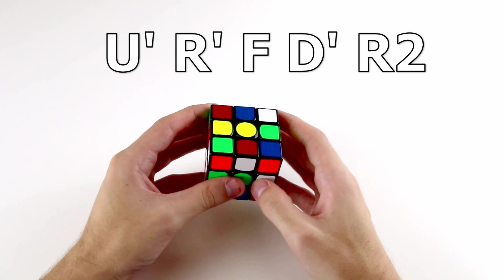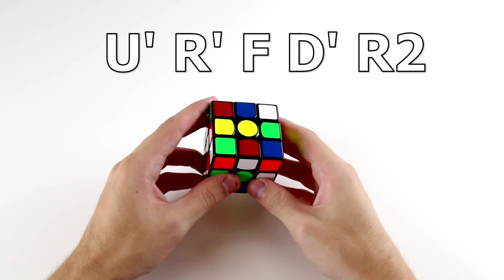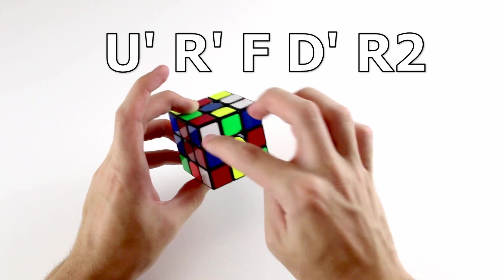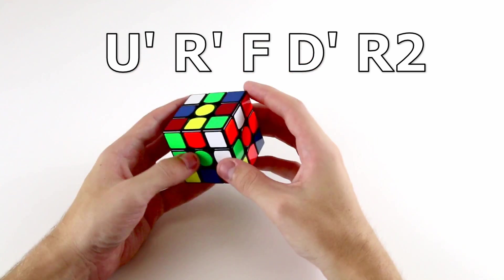So U' R' F D2 R2. The only time that these two pieces will be affected is when we do the U' at the start, and then they won't move from this position. And because they're connected, we know that they'll stay connected over there.